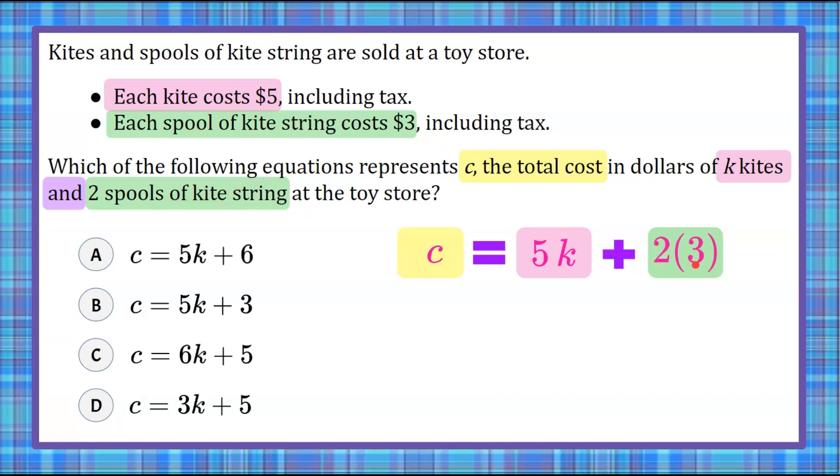So we're going to put two multiplied by three here, or you might put three plus three. But we know that this value right here, we're adding on specifically two spools of kite string.